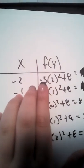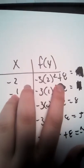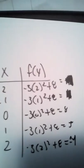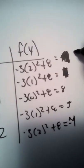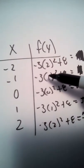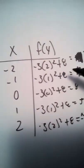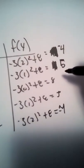You put your numbers into the equation. For example, negative 3 times 2 squared plus 8 would equal negative 4. And negative 3 times 1 squared plus 8 will equal 5. And so on and so forth.